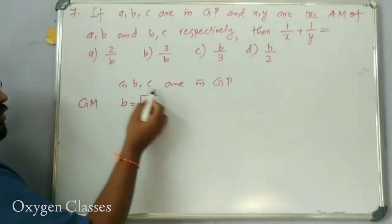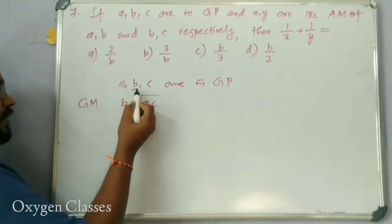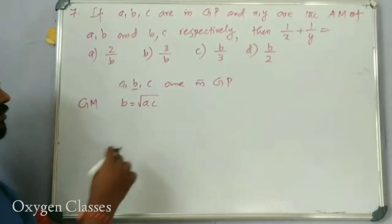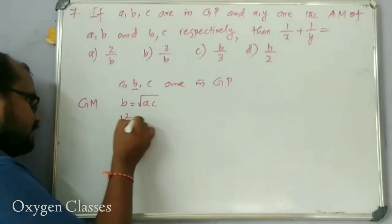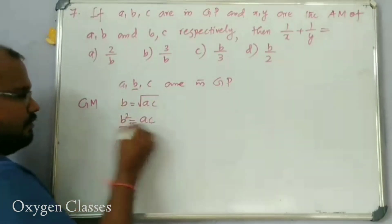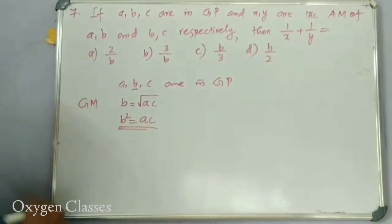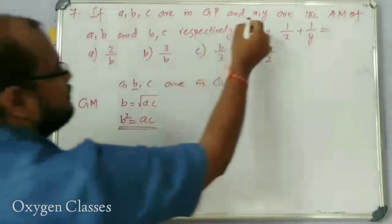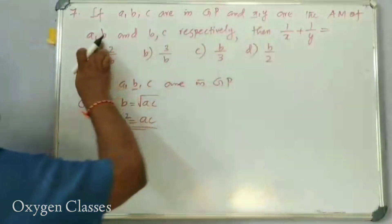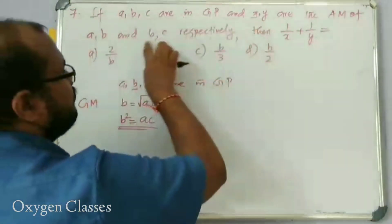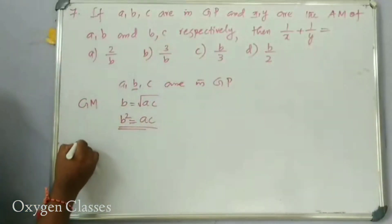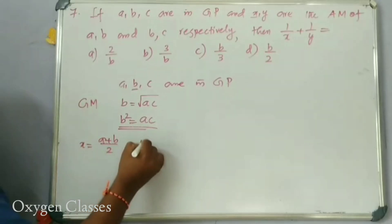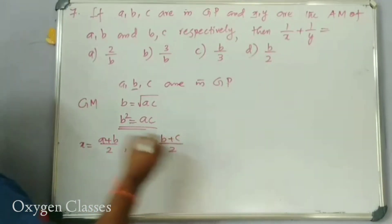If we have a geometric progression, we have B squared equal to A·C. X is the arithmetic mean of A and B, and Y is the arithmetic mean of B and C. So X equals (A plus B) by 2, and Y equals (B plus C) by 2.